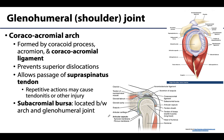Let's discuss the coracoacromial arch, located just superior to the glenohumeral joint. It is formed by the coracoid process of the scapula, the acromion process of the scapula, and these two structures are joined by the coracoacromial ligament, forming an arch over the superior portion of the glenohumeral joint. It plays a protective role, particularly in preventing superior dislocations. However, during full abduction or full flexion, structures in this region can come into close contact with or be impinged upon within this arch.